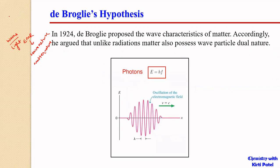In Compton scattering, radiation was incident on an electron; it strikes the electron and changes its direction, and the electron is ejected out in a different direction. The wavelength of this deflected wave was different from the wavelength of the incident radiation. This could happen only when a collision is occurring between two particles.